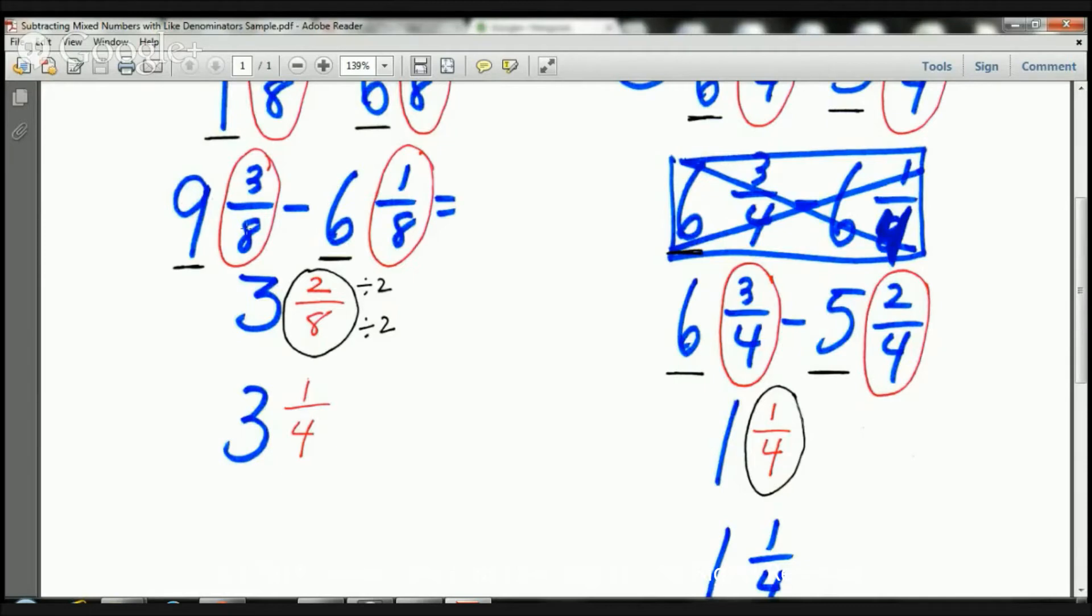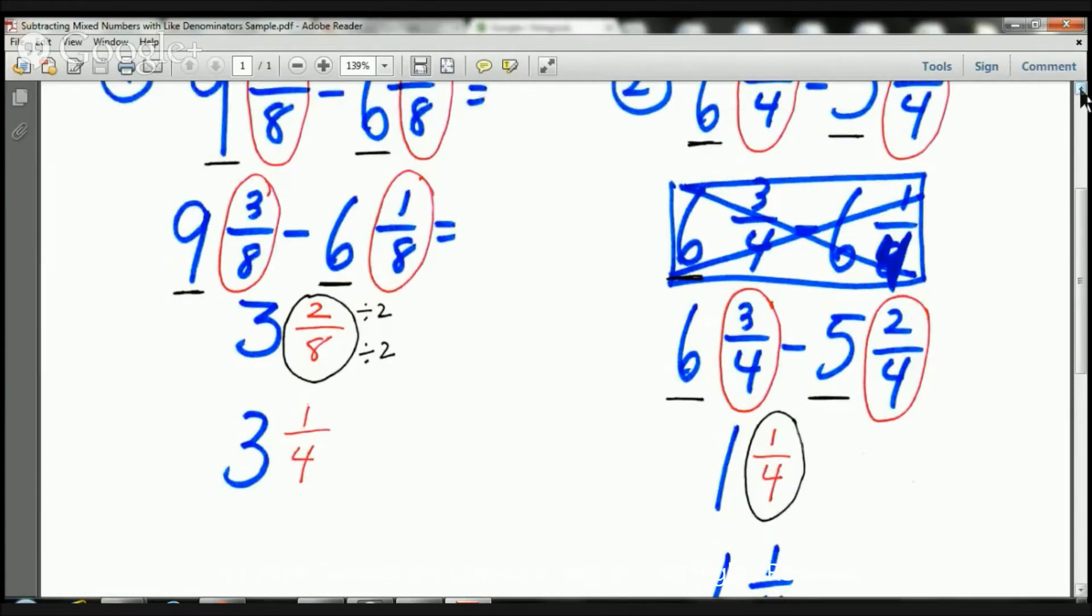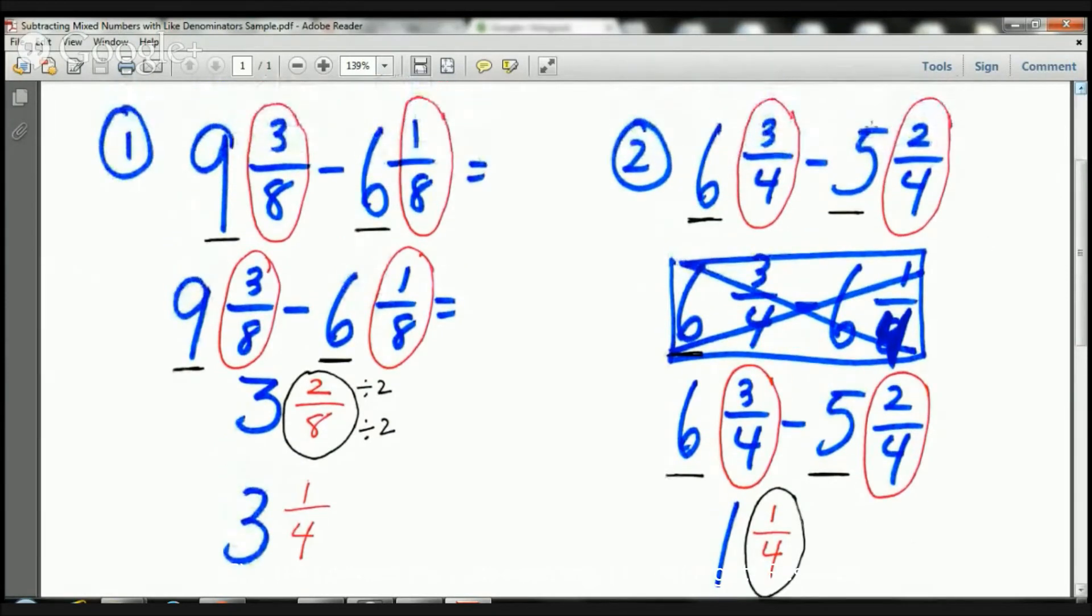So therefore, 9 and 3 8's minus 6 and 1 8's equals 3 and 1 4th. Let's take a look at our second example. Here we have a mixed number 6 and 3 4ths minus 5 and 2 4ths.